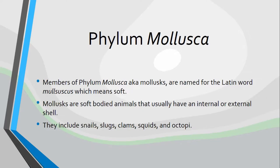They have what is referred to as either a hydrostatic or hydroskeleton, which is in reference to their soft bodies. Some of them will have a shell. In the case of the snail, it has one shell. The clams and oysters have two halves to a shell, which is why their class is called bivalve — they are the bivalvia, having two halves or two valves. Those shells help support and protect their bodies.